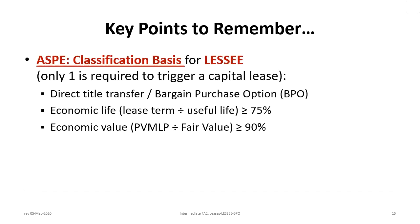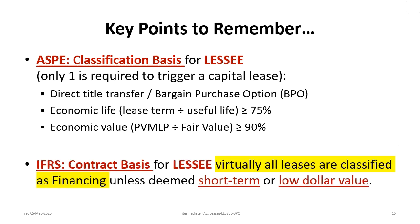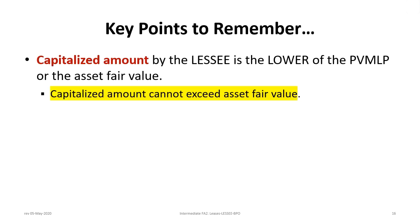Under ASPE's classification-basis approach, only one of the following is required to trigger a capital lease: a direct title transfer; a bargain purchase option (which assumes title transfer); economic life ≥ 75% (lease term divided by useful life); or economic value ≥ 90% (present value of minimum lease payments divided by fair value). Under IFRS using the contract-basis approach, all leases are essentially financing leases unless short-term or of low dollar value. The amount capitalized by the lessee is the lower of the present value of minimum lease payments or the asset fair value — it cannot exceed the asset fair value.